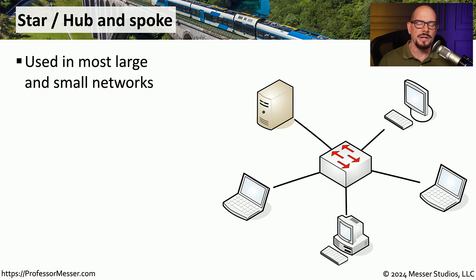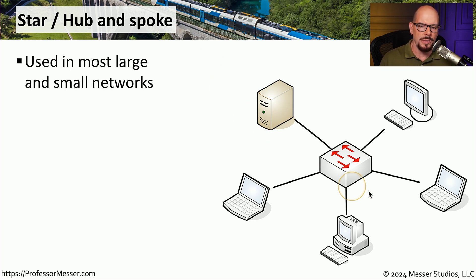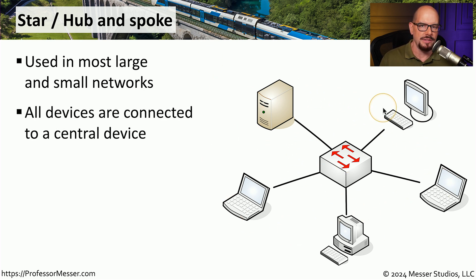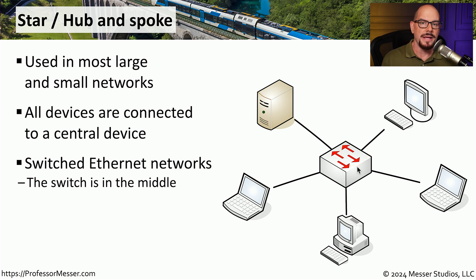Let's start with one of the most popular network topologies in use — that would be a star network, sometimes referred to as a hub and spoke network. This is what we use in most large networks to connect devices together. There is a central device used as the central networking component, and everyone on the network connects to that same central device. A good example is switched ethernet, where the ethernet switch sits in the middle of the network and all other devices connect to that same ethernet switch.